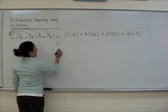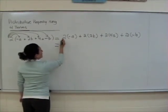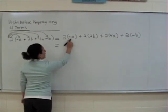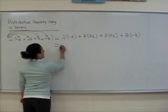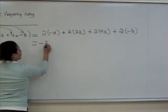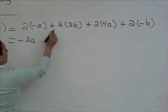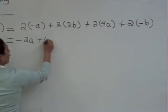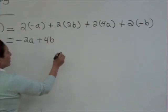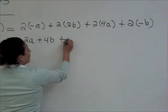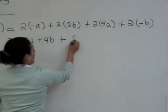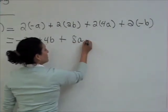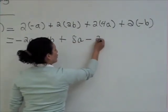Now we're going to simplify. 2 is positive and you have a negative here, so positive and negative is going to give us a negative sign: negative 2A. Plus — both of them are positive — so 2 times 2 is going to be 4B. Plus 2 times 4 is going to be 8A. And positive times negative is going to give us negative 2B.